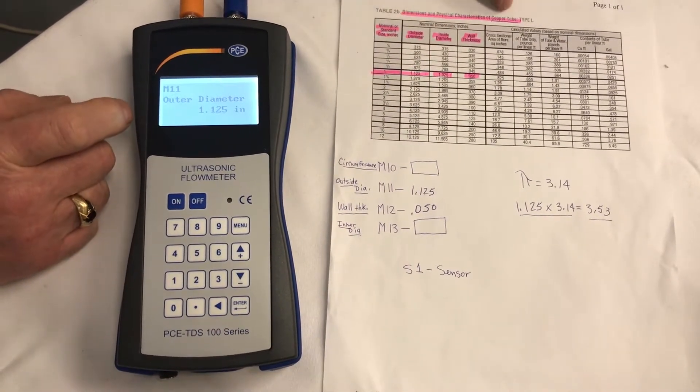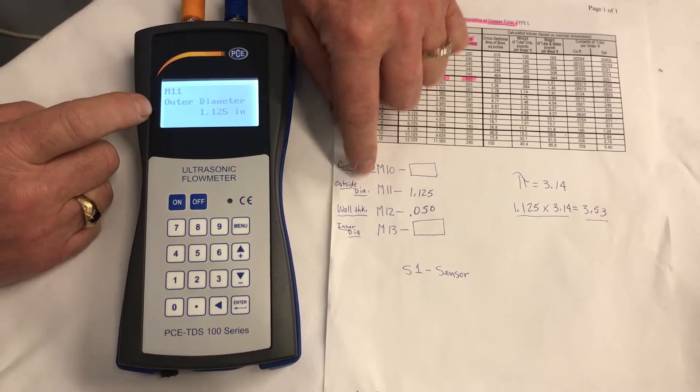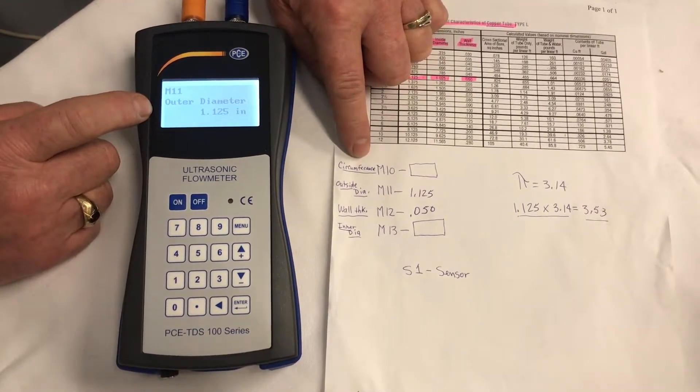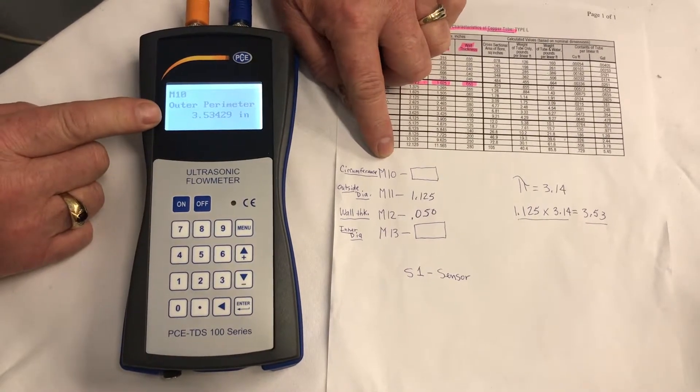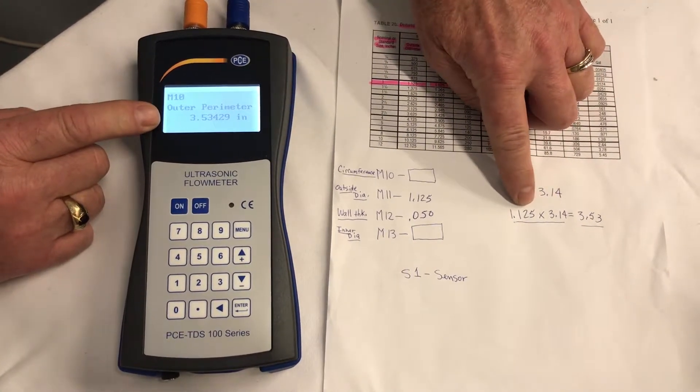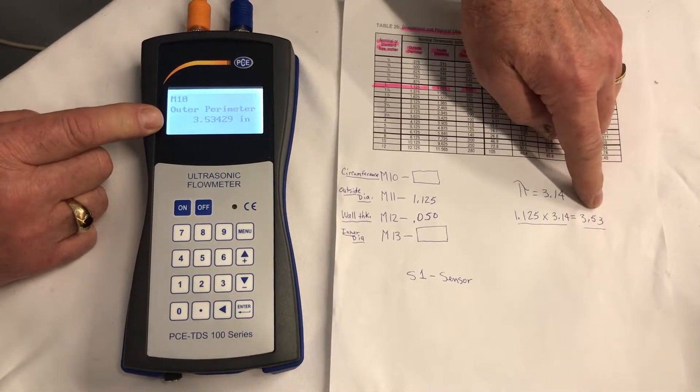Same as our chart for copper tube. If we put the outside diameter in, it figures the circumference for us, which is ILM-10. So we go back to ILM-10, and there it is, 3.53. 1.125 times 3.14, which is pi, equals 3.53. That's what the meter told us.